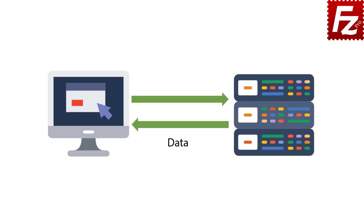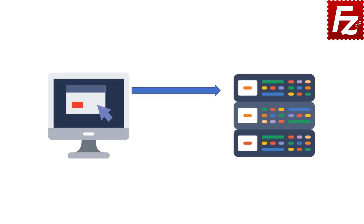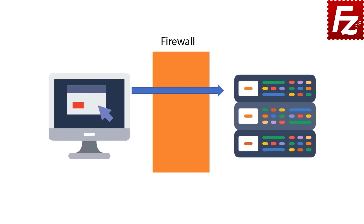Data connections can be established in two ways. In active mode, the client starts listening on a port and communicates that port number to the server through the control connection. FileZilla and FileZilla Pro use any available port. The server then initiates the data connection to the client's port. In situations where the client cannot accept connections — like when blocked by a firewall — passive mode must be used. In passive mode, the client uses the control connection to request an IP address and port, which are used to open the data connection. FileZilla and FileZilla Pro support both active and passive FTP modes, with passive mode being the default.